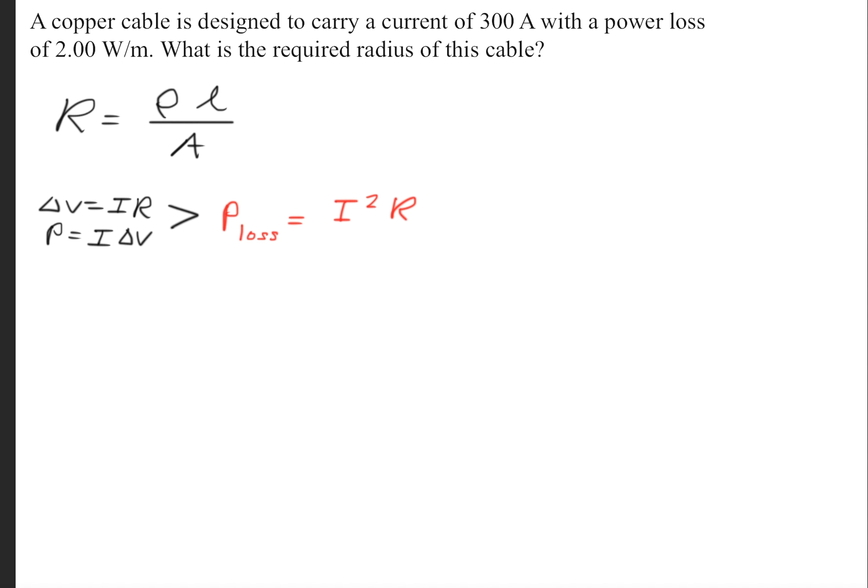The next thing we need is the power loss formula. We take Ohm's law, which is delta V equals IR, and we take the power formula, which is I times delta V, and we make a substitution for delta V. We get that the power loss is equal to I squared R.